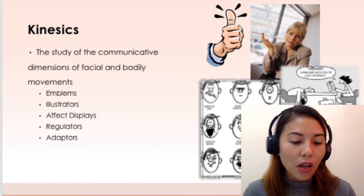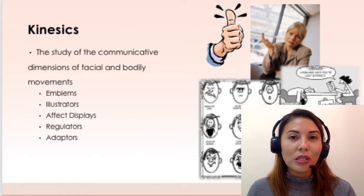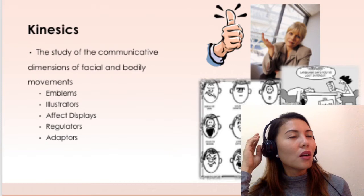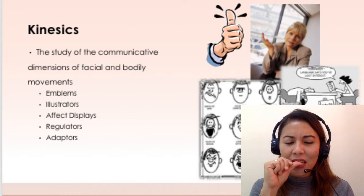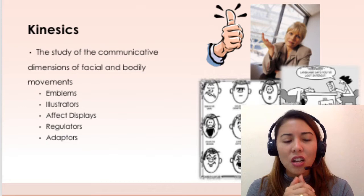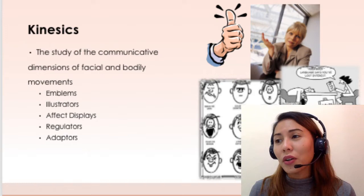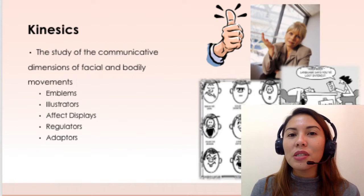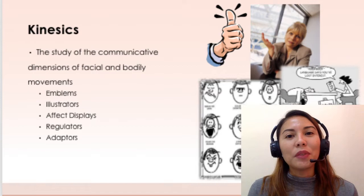And the last one are adapters — actions that release physical or emotional tension when someone is anxious. What do you do when you're nervous or tense? Some people twist their hair, bite their fingernails, crunch their knuckles, or keep touching their ID when they're scared. So again, the five subcategories of kinesics are emblems, illustrators, affect displays, regulators, and adapters.